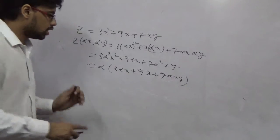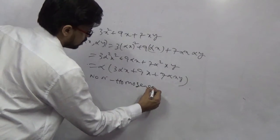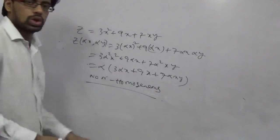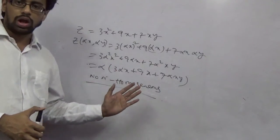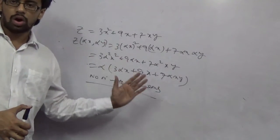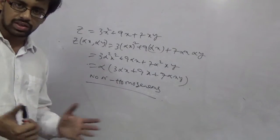So this is called non-homogeneous. So if it is non-homogeneous, there is no point in finding the degree of homogeneity. So this is all about finding or checking whether a function is homogeneous and if it is homogeneous, what is its degree?